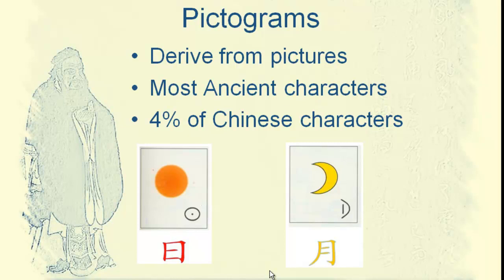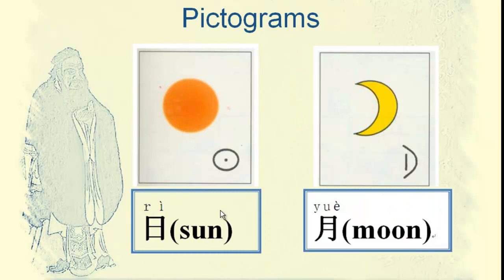Let's have a look at more characters. The first one: 日, 日 — means the sun. The second one: 月, 月 — means the moon.